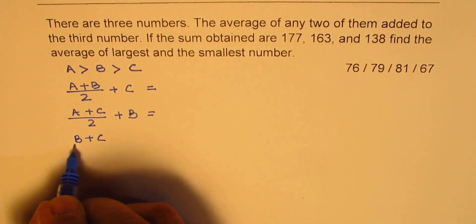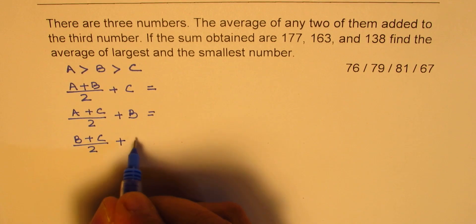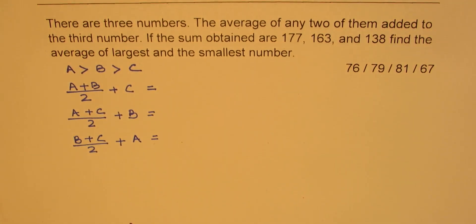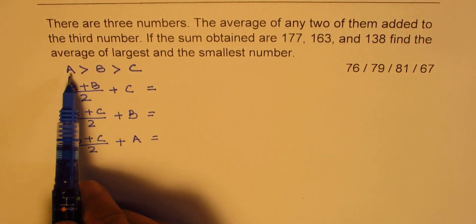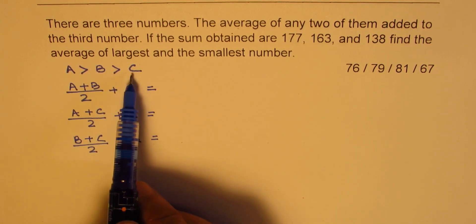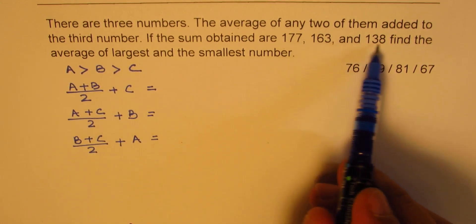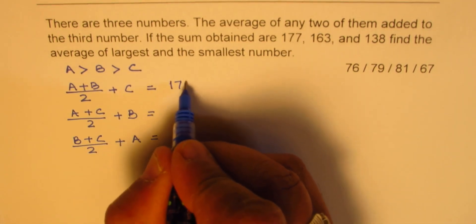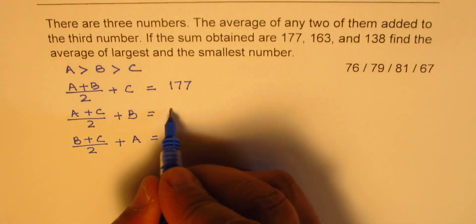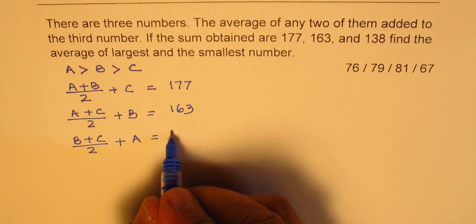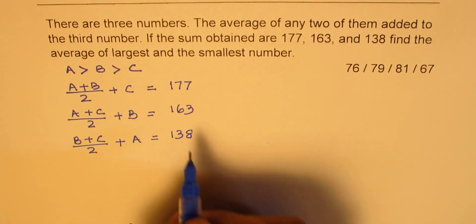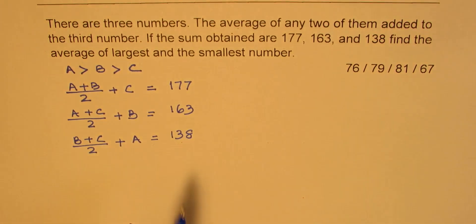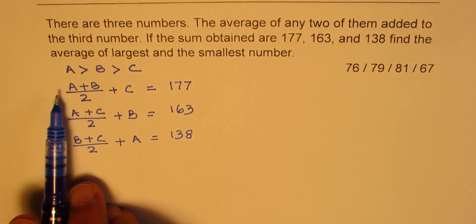Since we have assumed that A is the biggest number and C is the smallest number, we write from these given numbers the biggest number first, so we'll get this as 177, 163, and then 138.